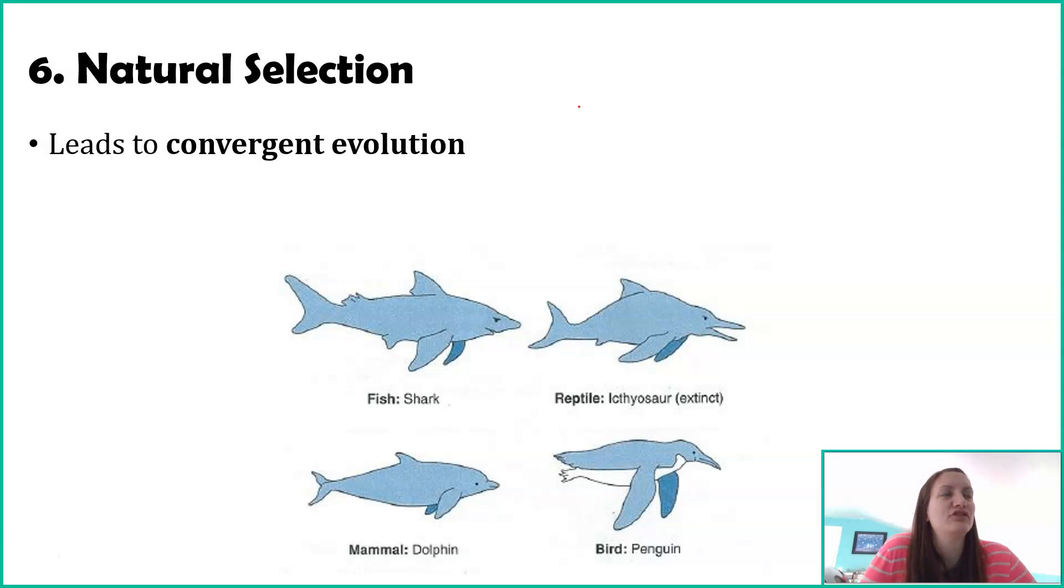Something related or a consequence of natural selection is this idea of convergent evolution. Think of the word converge. Converge, I think of something that's far apart and it comes together. It converges together. Convergent evolution is not really evolution at all. We use the term evolution, but it's not quite right. Convergent evolution is this idea that organisms living in the same environment are subjected to the same selective pressures.